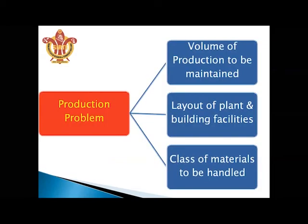Under production problems, one factor is the volume of production to be maintained — we should know what quantity we need to produce. Another factor is the layout of the plant and building facilities, where the proper layout design affects the class of materials to be handled.